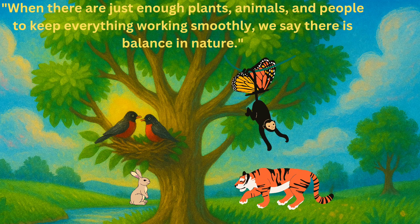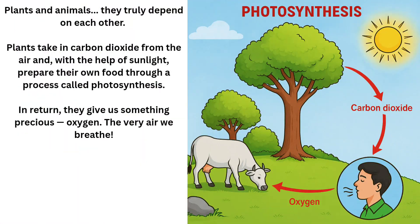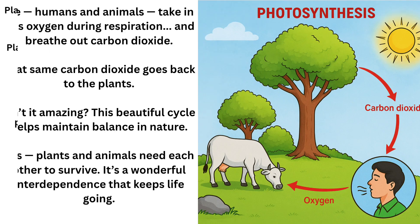When there are just enough plants, animals, and people to keep everything working smoothly, we say there is balance in nature. Plants and animals truly depend on each other. Plants take in carbon dioxide from the air and, with the help of sunlight, prepare their own food through a process called photosynthesis. In return, they give us oxygen — the very air we breathe. We, humans and animals, take in this oxygen during respiration and breathe out carbon dioxide. That same carbon dioxide goes back to the plants. Isn't it amazing? This beautiful cycle helps maintain balance in nature. Plants and animals need each other to survive — it's a wonderful interdependence that keeps life going.